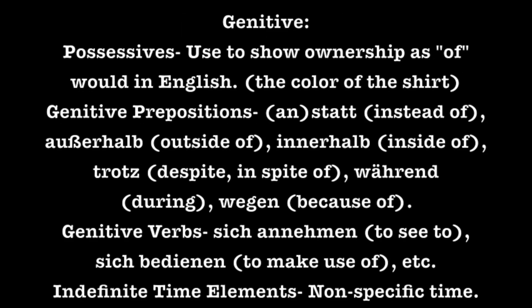The last case on our list is the genitive case. We use it with possessives — it shows ownership, as the word 'of' would in English, such as the color of the shirt. The genitive prepositions would be anstatt (instead of), außerhalb (outside of), innerhalb (inside of), trotz (despite or in spite of), während (during), and wegen (because of). There are also some genitive verbs, such as sich annehmen (to see to) and sich bedienen (to make use of), though genitive verbs are generally used in academic works rather than in conversational German. You can also use the genitive case with indefinite time elements — non-specific times, such as 'one day I went outside.'